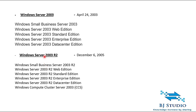The sixth edition, Windows Server 2003 R2, was released in December 2005. It has the same flavors and editions as Windows Server 2003, but one thing they added is Windows Computer Cluster Server 2003. From here, they started adding cluster concepts into the server.